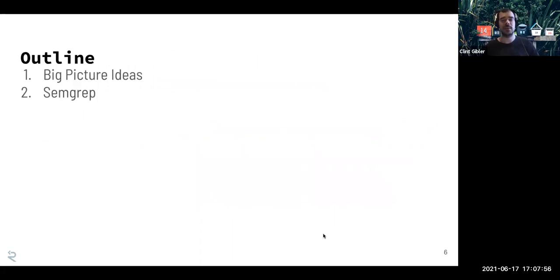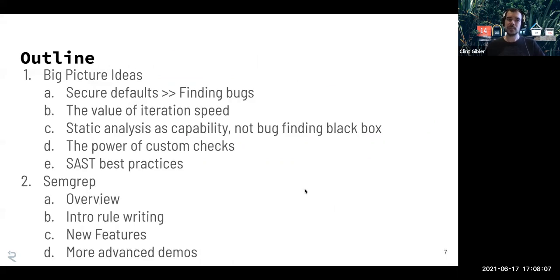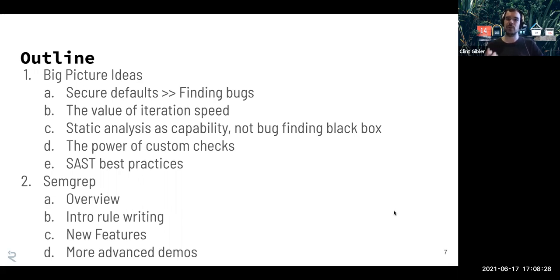This talk is basically two parts — or workshop rather. First we'll talk about some big picture ideas, then get into the weeds with SEMGREP: how it works and how to use it in practice. The big picture ideas include why secure defaults are much more powerful than focusing on finding bugs, the value of having fast iteration speed in security, and the idea of static analysis as a fundamental capability of your security program.